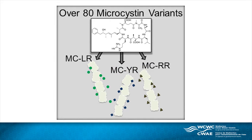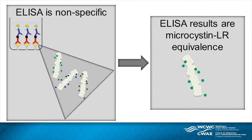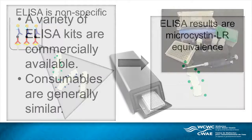There are over 80 variants of microcystins, but the most common is microcystin LR. This method is not specific to a particular variant — it measures all microcystin variants, and results are expressed as microcystin LR equivalents.